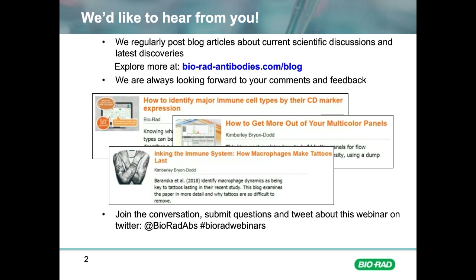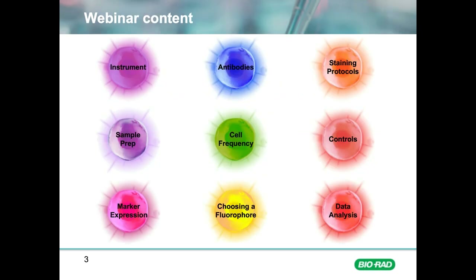Hello everyone and welcome to today's flow cytometry webinar. We'll start with a brief overview of today's topics. We will cover nine topics that are essential to consider before you embark on a flow cytometry experiment, such as the instrument you're going to use and which antibodies and fluorophores you should use. I will discuss experimental techniques such as sample prep and staining protocols, and how the biology of your sample is important in relation to marker expression patterns and cell frequency. Finally, I will briefly discuss the controls you should use and how to analyse your data.